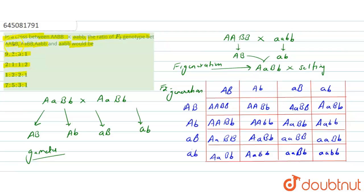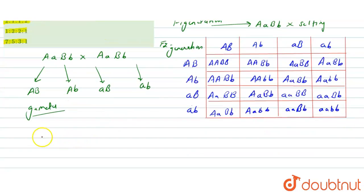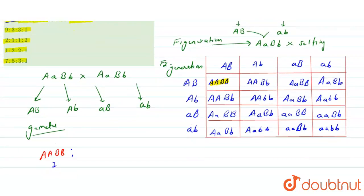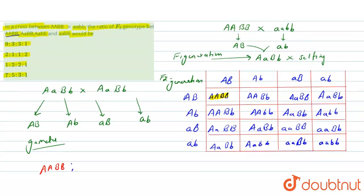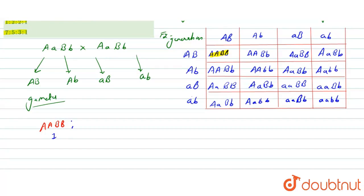Now the question asks for the genotypic ratio. For genotype AABB: looking through the F2 results, there is only one — so that is 1. The next genotype is AaBB: capital A, small a, capital B, capital B. Looking through the combinations, we can find two of those — so that is 2.